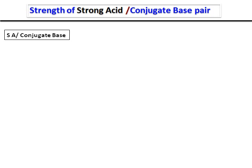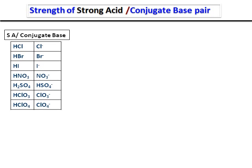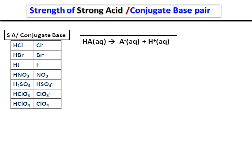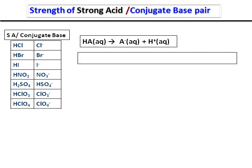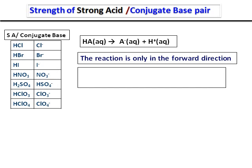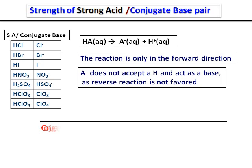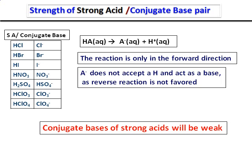Let's look at the relative strength of a strong acid and its conjugate base pair. The seven strong acids and their corresponding conjugate bases are listed. A strong acid ionizes completely: HA gives A minus and H plus, and the reaction only goes in the forward direction. A minus will never accept a proton to give back HA. Therefore, for all strong acids that ionize completely, the conjugate base does not accept a proton and hence is a weak base. The conjugate bases of all strong acids will be weak.